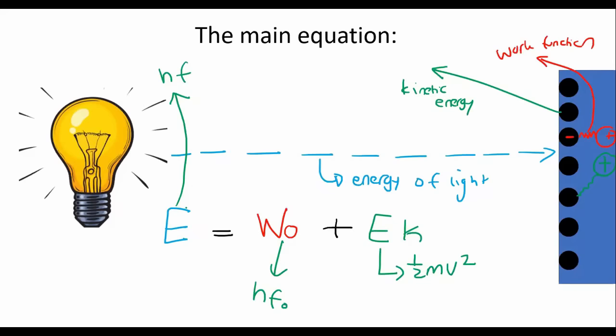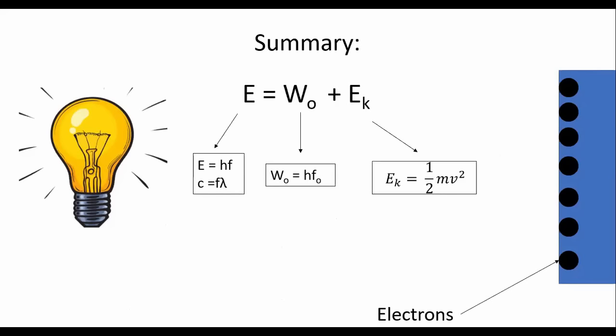And then remember that sometimes, to calculate this one, they're going to give you wavelength instead. So then you would rather use this formula. And then you would get your frequency by doing this. That's all for this one here. Formula that governs this entire chapter. There's a nice little summary. We've got the energy of the light, the work function of the metal, and the remaining energy will be converted into kinetic energy.